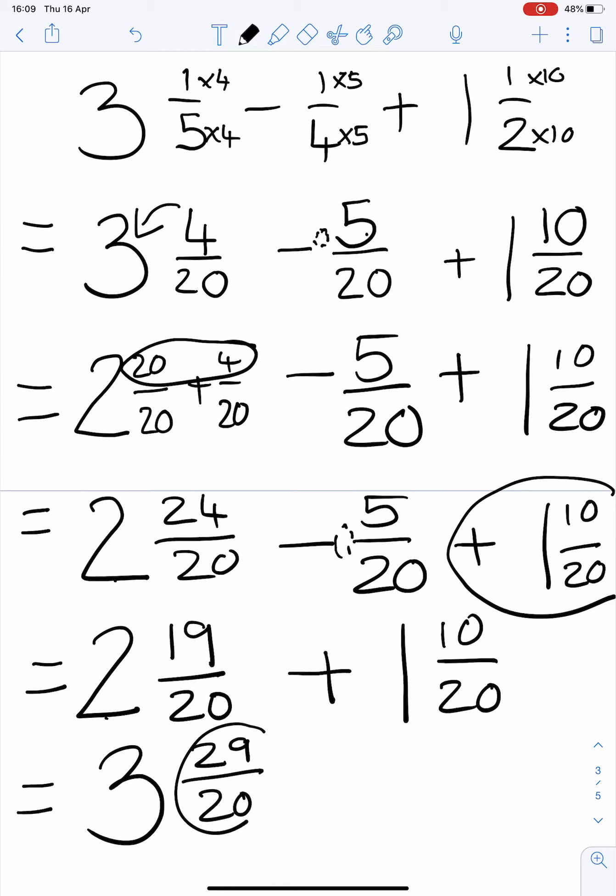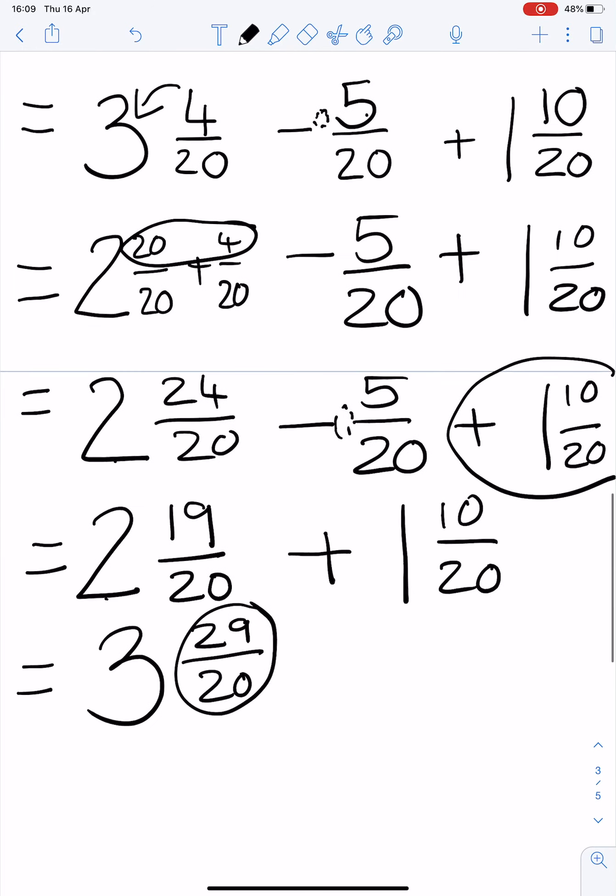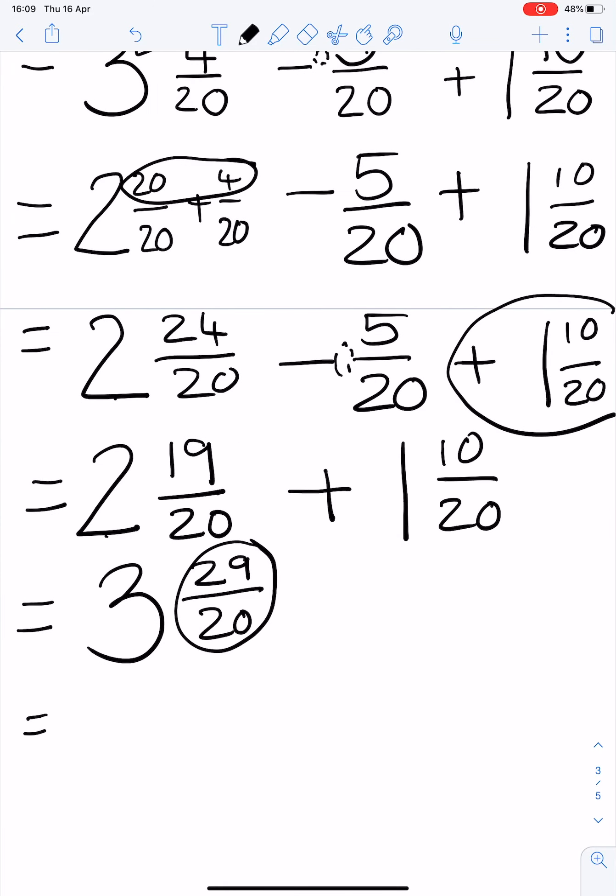2 plus 1 is 3. 19 plus 10 is 29 over 20. This is an improper fraction, so we need to simplify. 20 fits into 29 once, so we add that to the 3 which makes 4, remainder 9/20, which I cannot simplify any further.